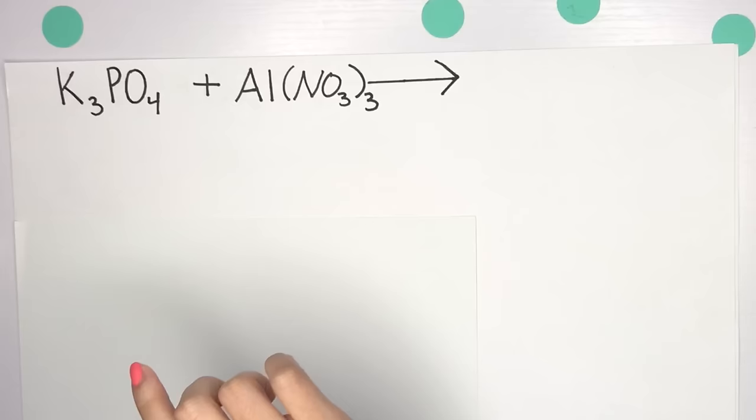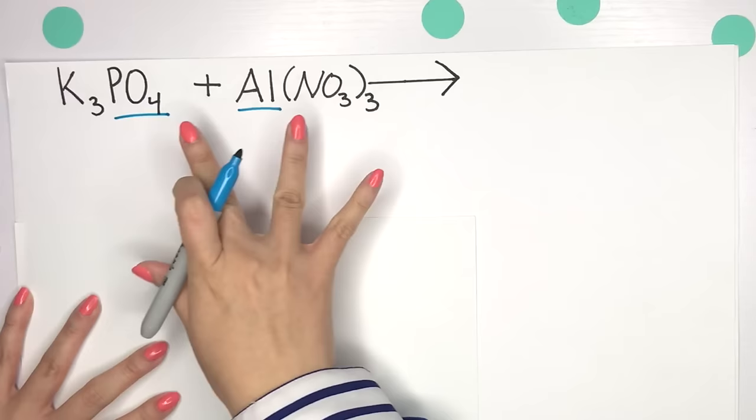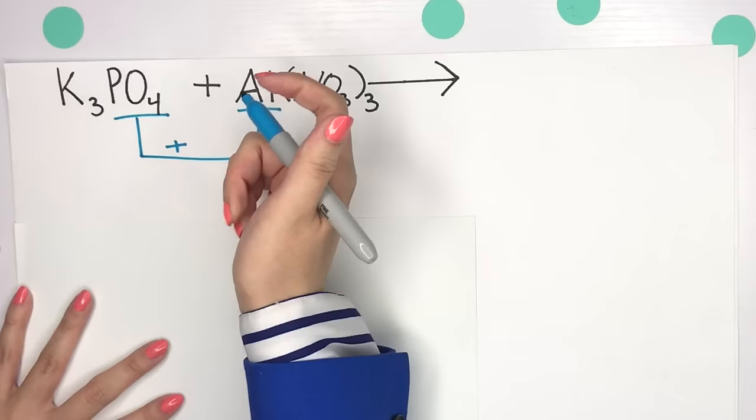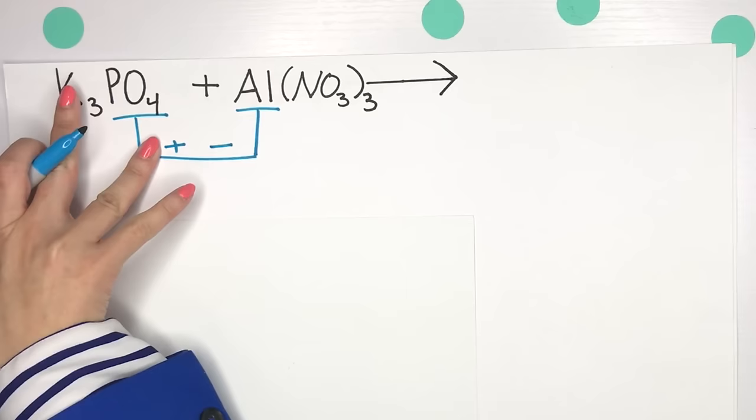So if we apply that trick where our inner elements combine to form a compound, let's go ahead and always remember that our metal goes first, so the positive goes first, then the negative. How I like to remember this is you always want to be positive before you're negative.